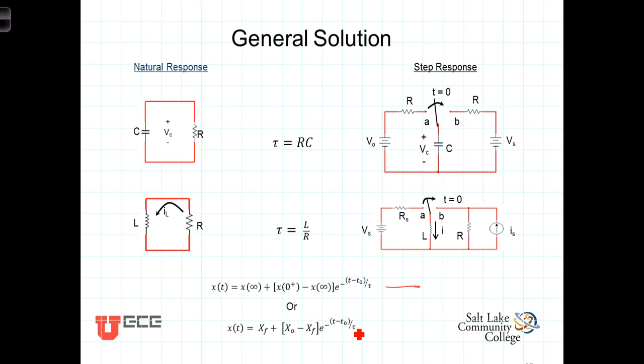These solutions work for both the natural response, in which case the final quantities x at infinity or x final would be 0 and you're simply left with x of t equals the initial quantity times e to the minus t minus t0 over tau. And obviously they work for the step response also.